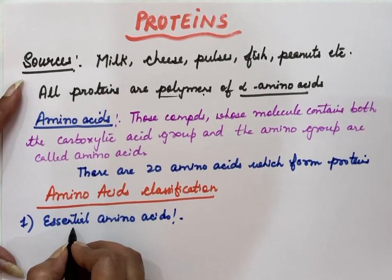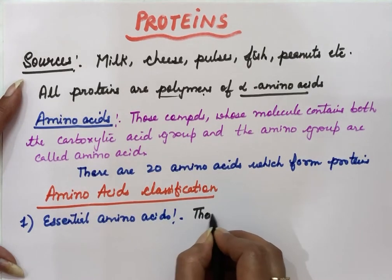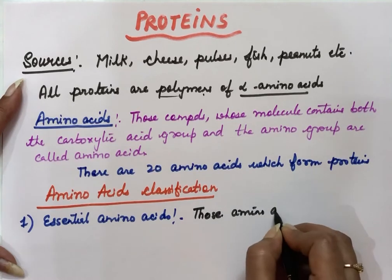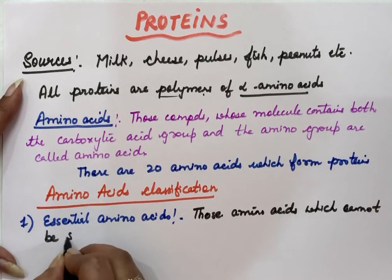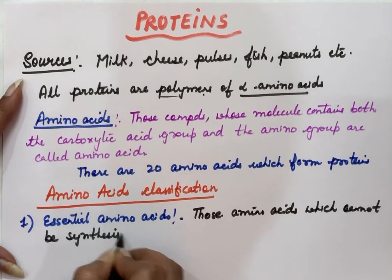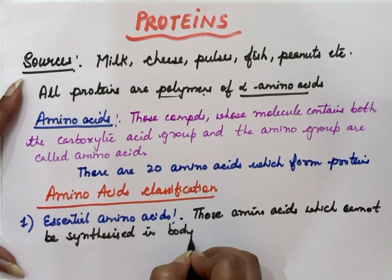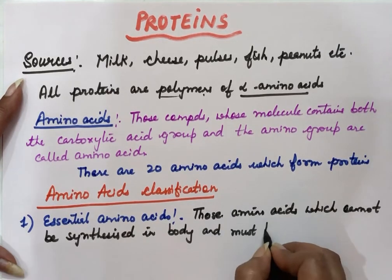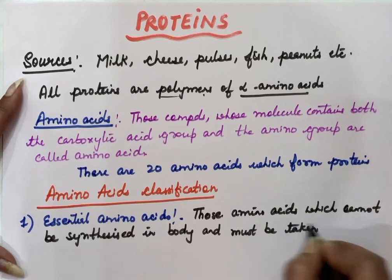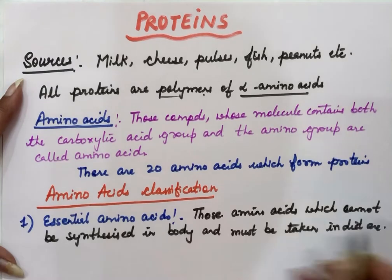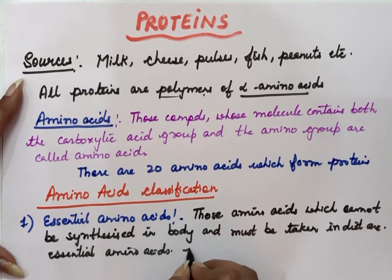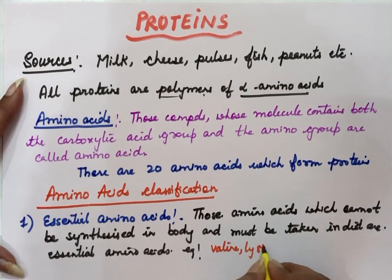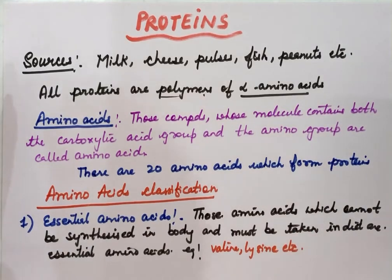Essential amino acids are those which cannot be synthesized in the body but are required by the body, so they must be taken in a diet. Examples of essential amino acids include valine, lysine, and others.